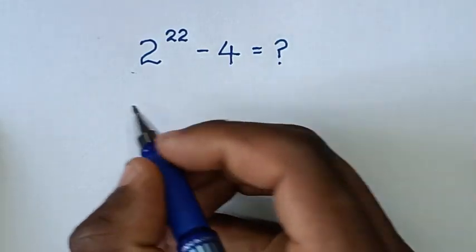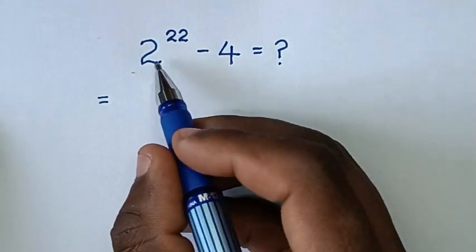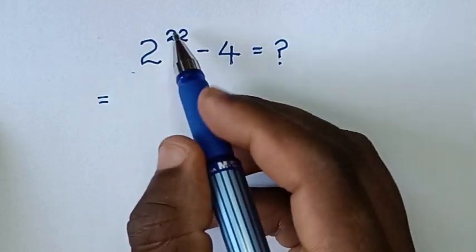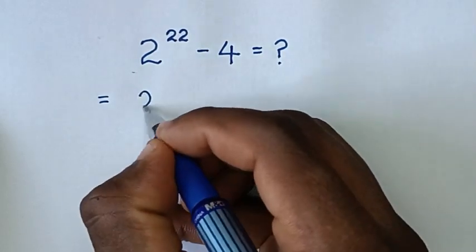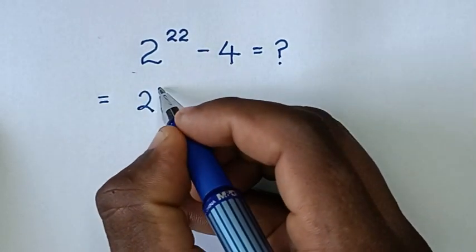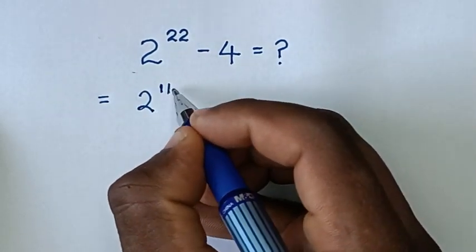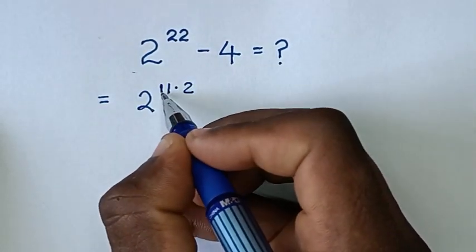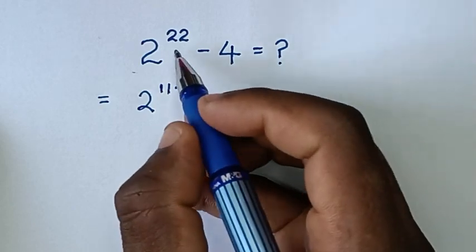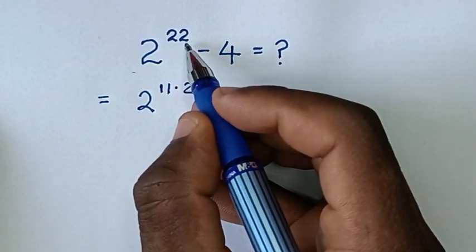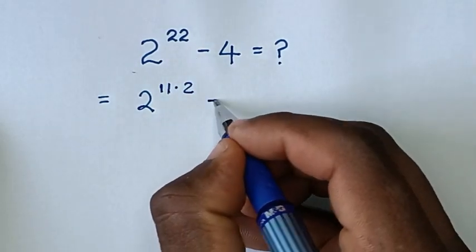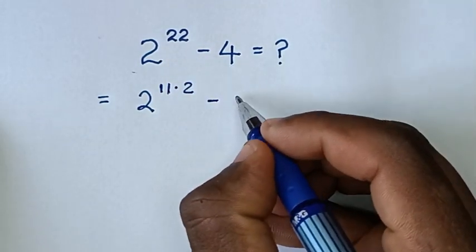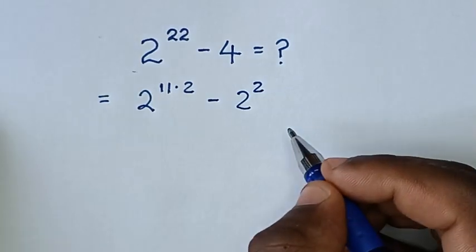So it will be equal to: from here, 2 power of 22 we make into a square, so it will be 2 power of 11 times 2, because 11 times 2 is the power of 22. Then minus 4, written as a square, it is 2 power of 2.